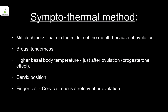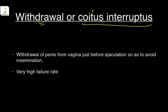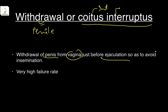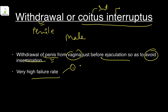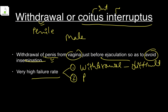Withdrawal method, or coitus interruptus: the male partner withdraws the penis from the vagina just before ejaculation so as to avoid insemination — ejaculation occurs outside the vagina. However, it has a very high failure rate for two reasons: withdrawal is very difficult to control at that moment, and pre-ejaculate fluid also contains some sperms.